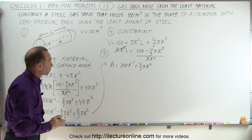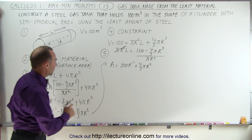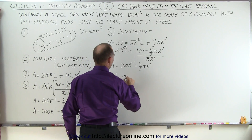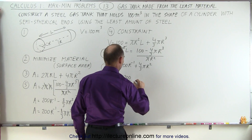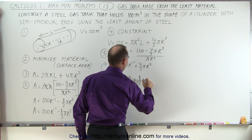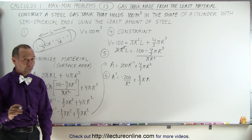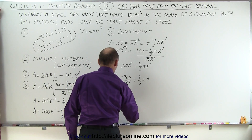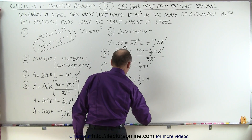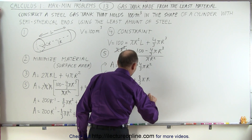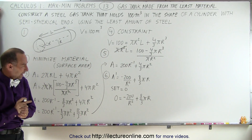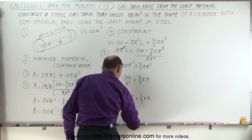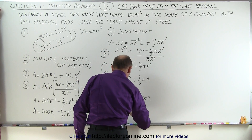Now we're ready for the next step. We need to take the derivative and set it equal to zero. We have A′ equals minus 200 divided by r² plus (8/3)πr. Setting that equal to zero, we get: 0 equals minus 200 over r² plus (8/3)πr. Bringing the first term over: 200 over r² equals (8/3)πr.